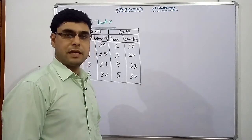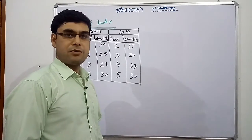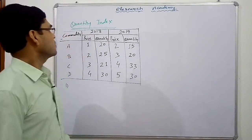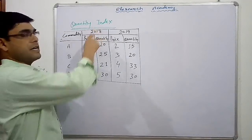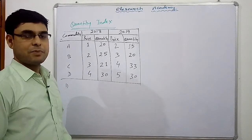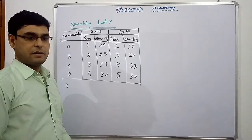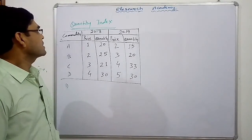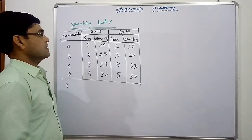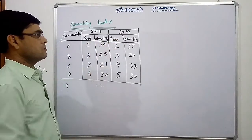Hello friends, how are you? I hope you all are good and doing great things. So friends, I welcome you all in my statistical series and today we are going to discuss a topic that is Quantity Index Number. In previous lectures we discussed the price index number under the weighted and the unweighted method. So now we are going to discuss the quantity index. We have some information given here: commodity prices and quantity of 2018 and 2019.